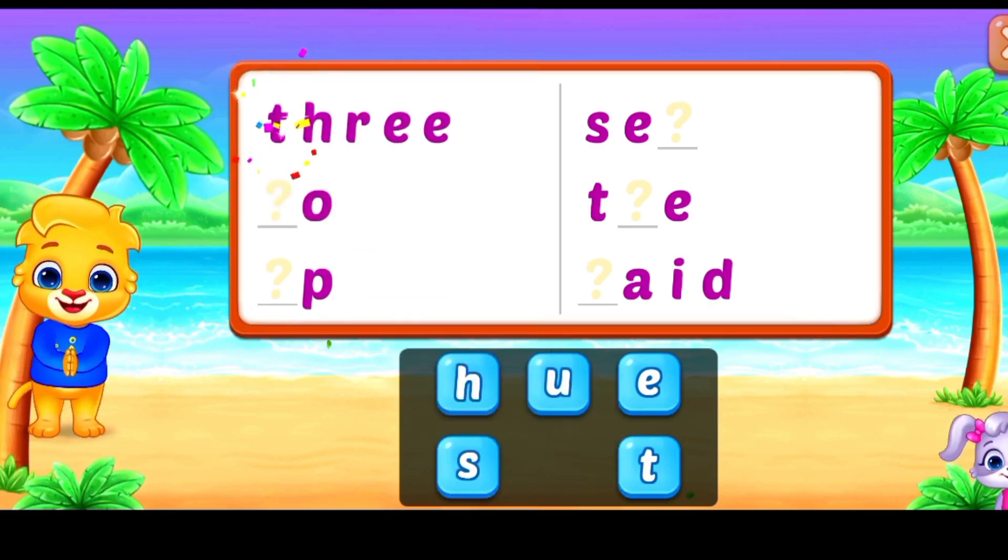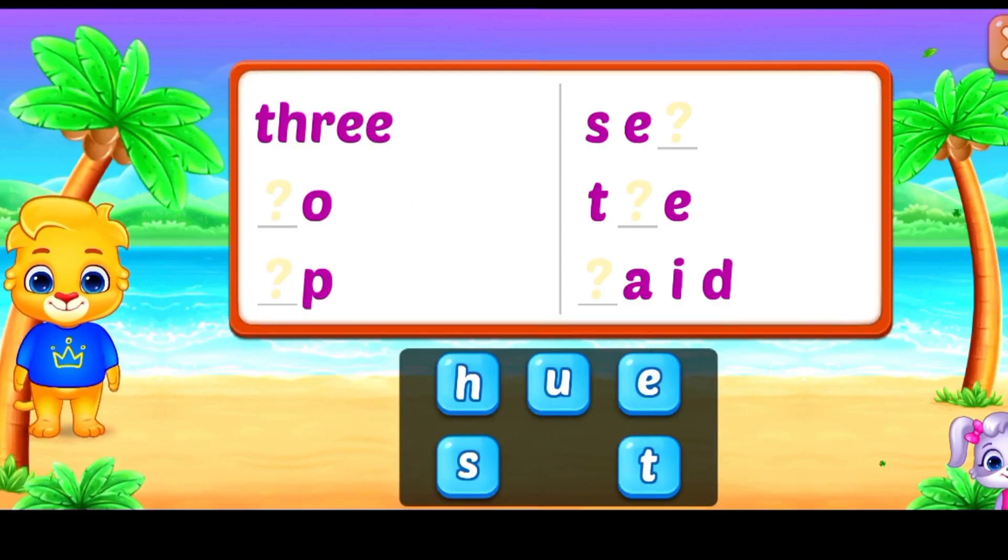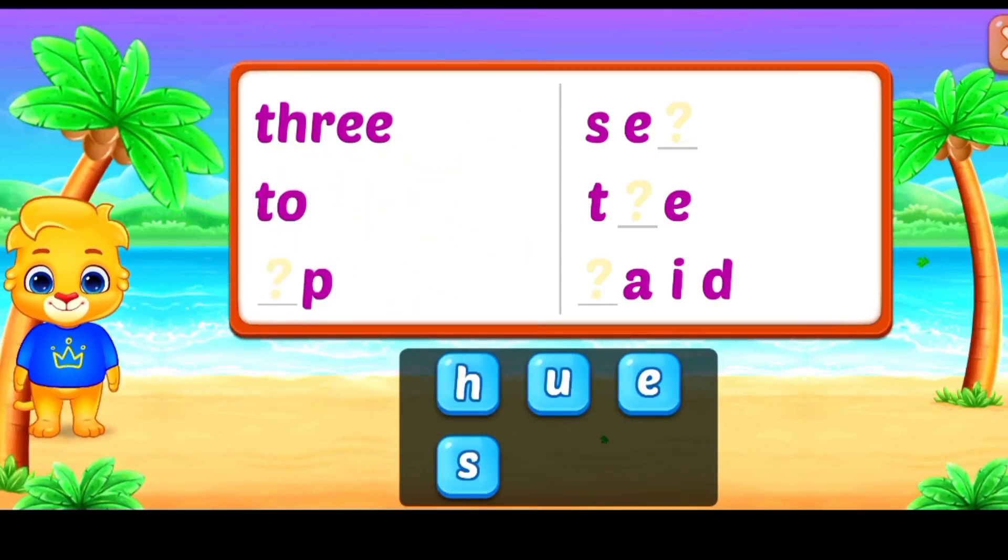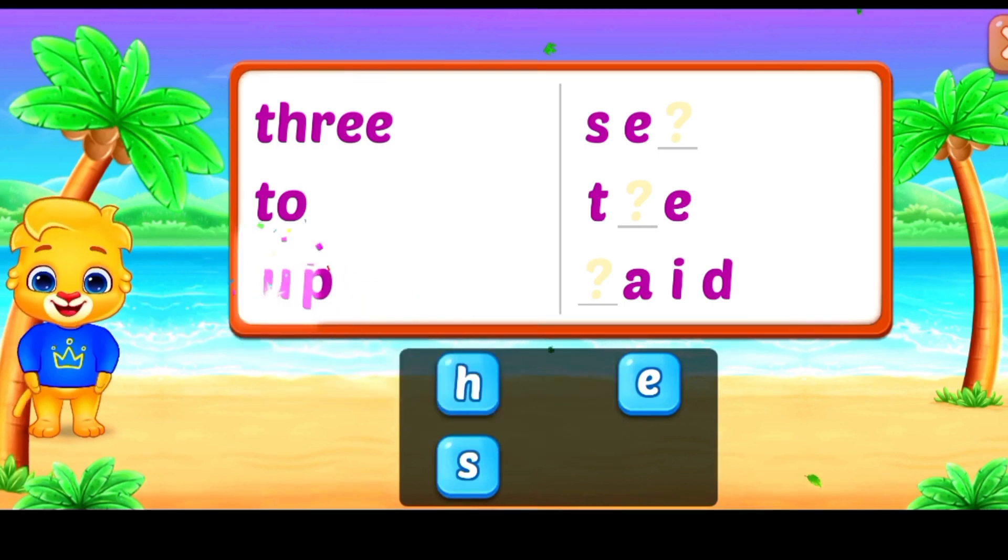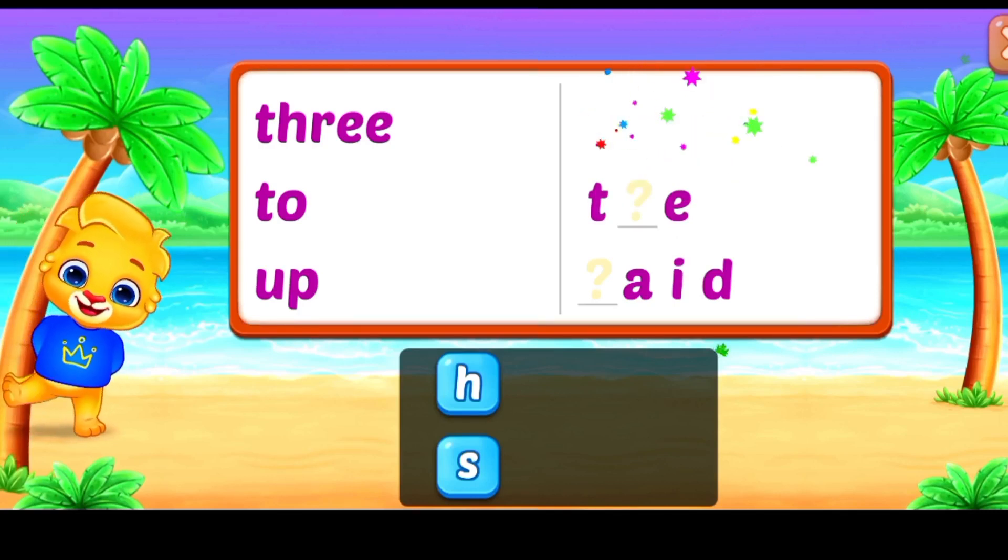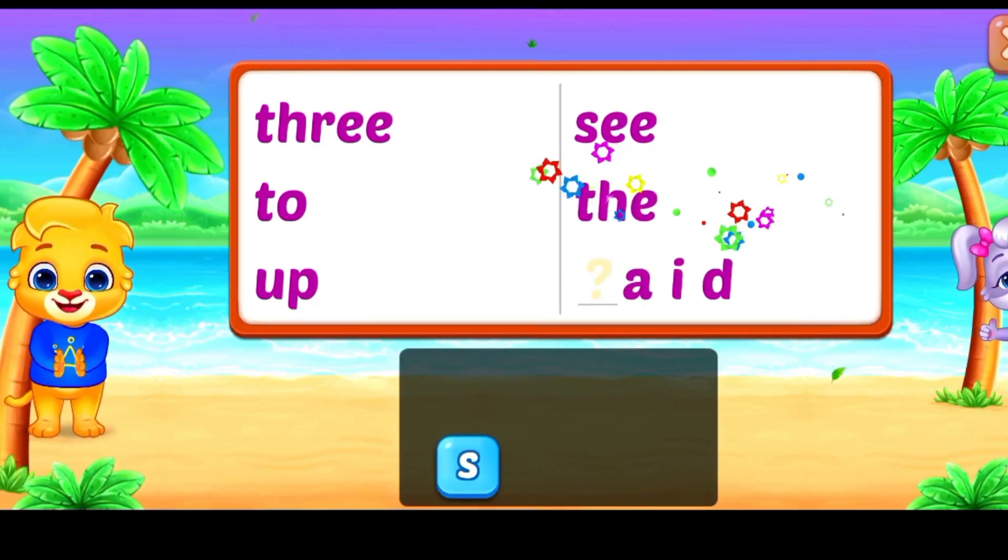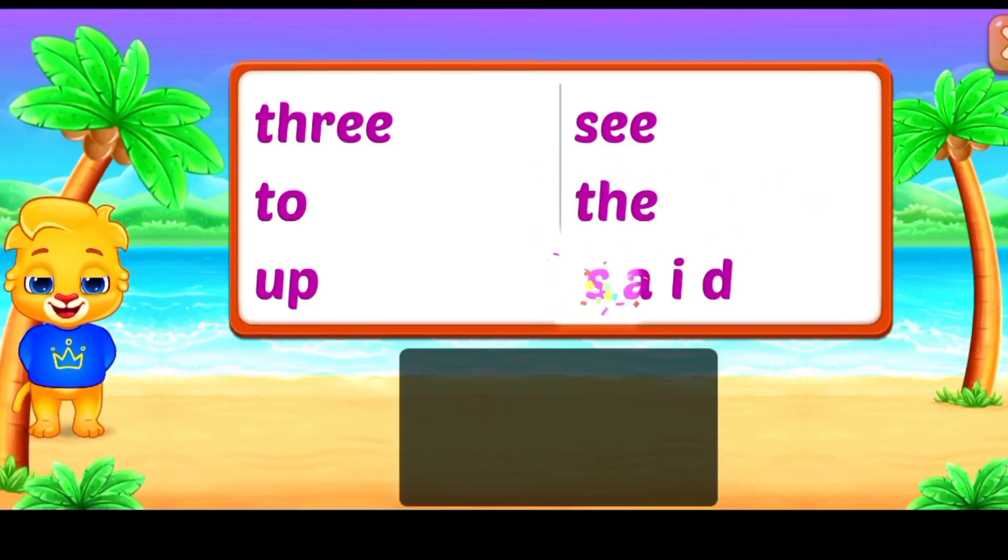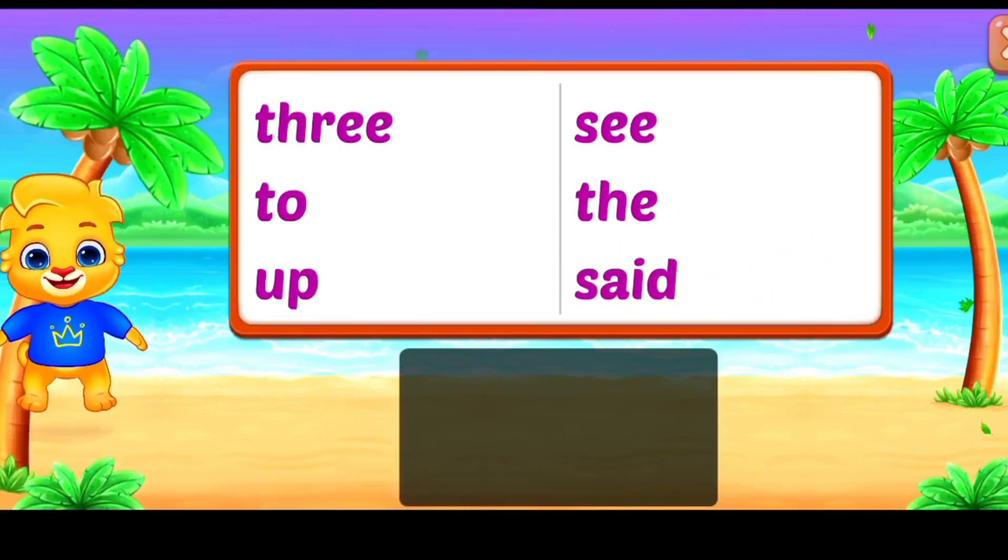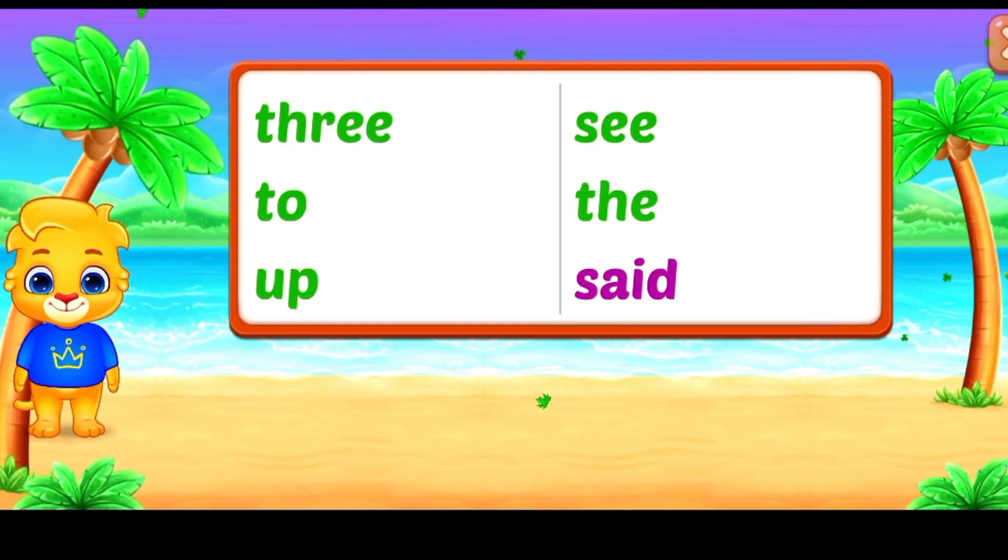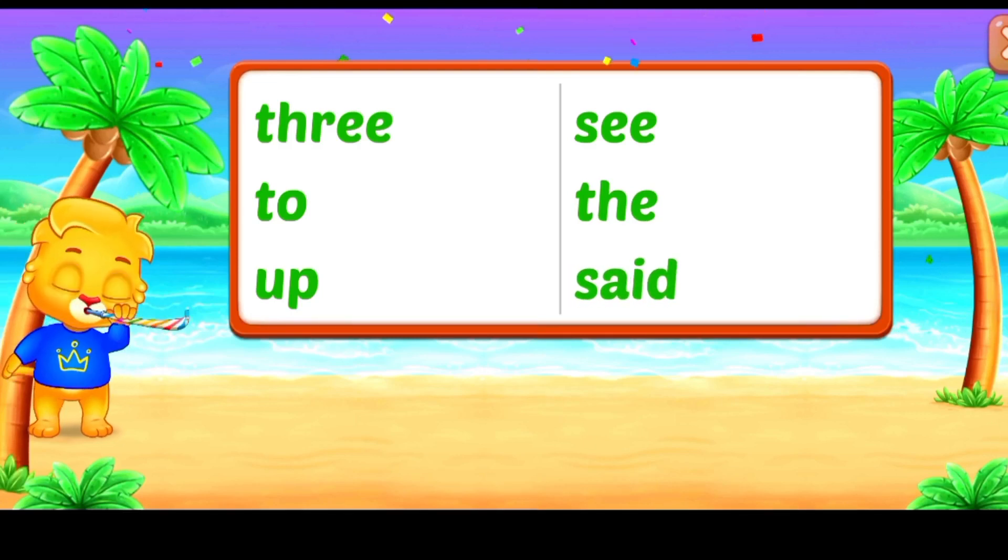t 3 t 2. u up. e c the good job the s said woohoo. 3 2 up c the said correct